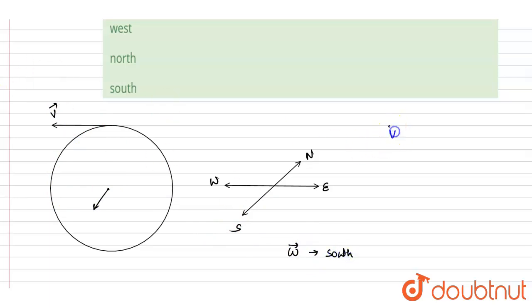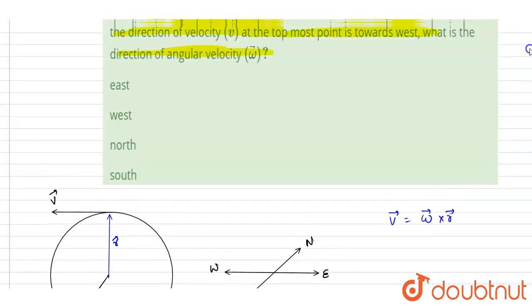So if you see here, this is the omega vector, this is the r vector, and this is the omega vector, right? So if you take the omega cross r, you will get the v direction, v vector direction, that is the westward.